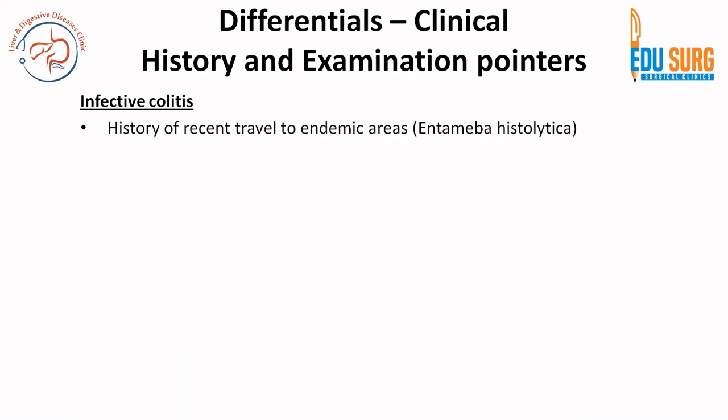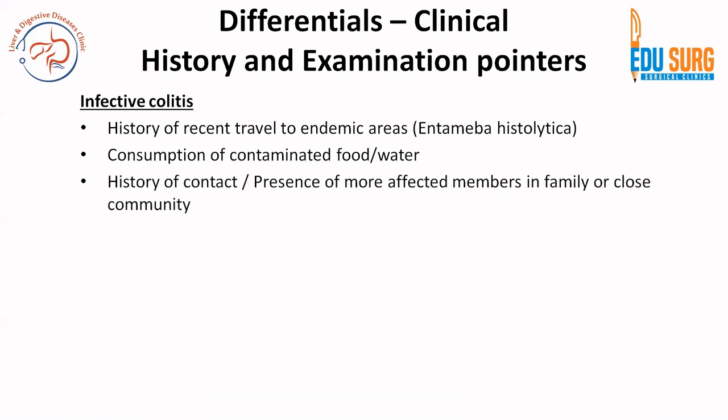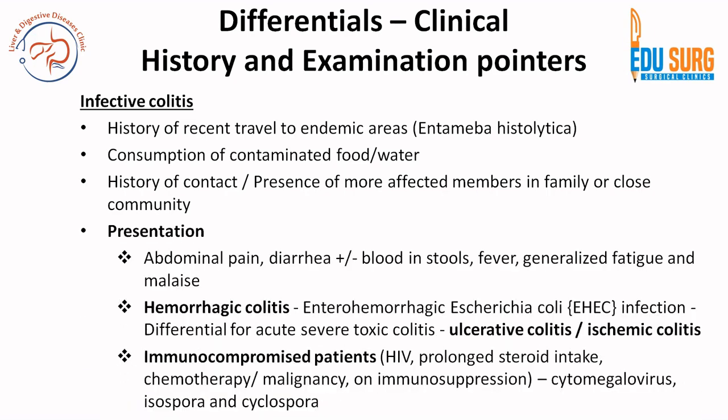Moving to infective colitis, there are specific history points that can point you towards the diagnosis. One is history of recent travel to endemic areas. Entamoeba histolytica amoebiasis is very common intestinally. Consumption of contaminated food and water, and history of contact or presence of more affected members in family or close community — all these points can point toward infective colitis. Presentation can be mild or severe: abdominal pain, diarrhea with or without blood in stools, fever, generalized fatigue and malaise. The type of fever is different in infective colitis than intestinal tuberculosis, and diarrhea with blood in stools is fairly common in infective colitis.